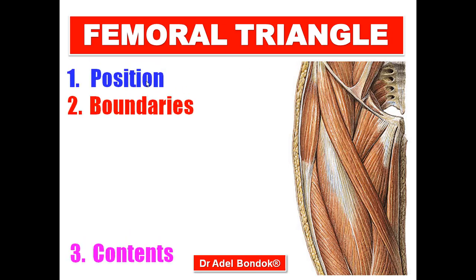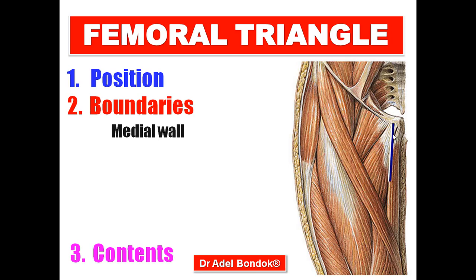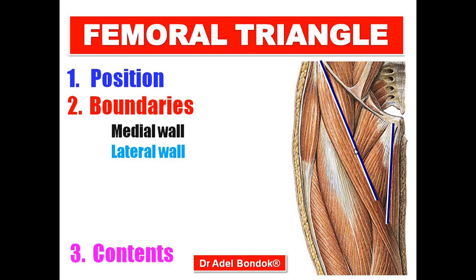Regarding the position of the femoral triangle, it is located in the front of the upper third of the thigh. Regarding the boundaries, the medial wall is the medial border of the adductor longus muscle. The lateral border is the medial border of the sartorius muscle. The base of the triangle is the inguinal ligament. The apex is the meeting of the sartorius and adductor longus.